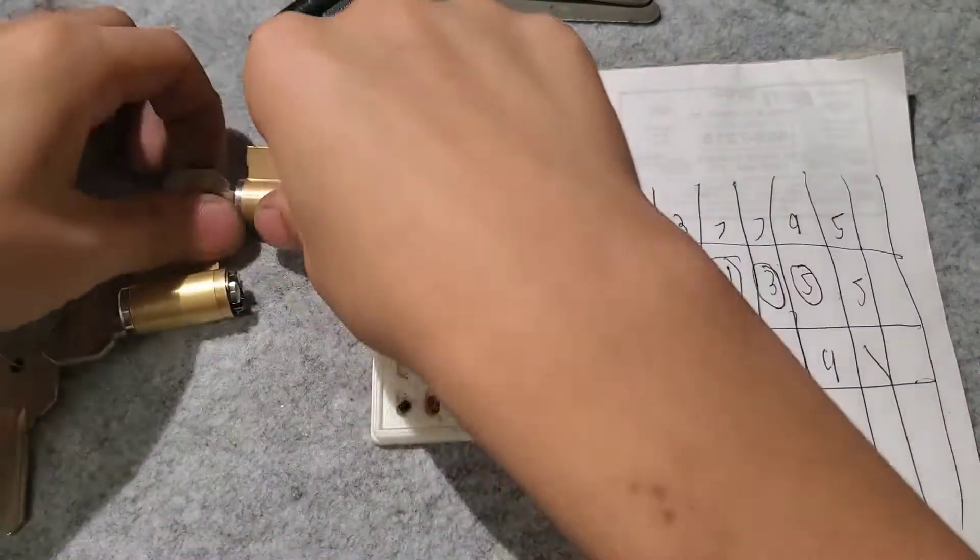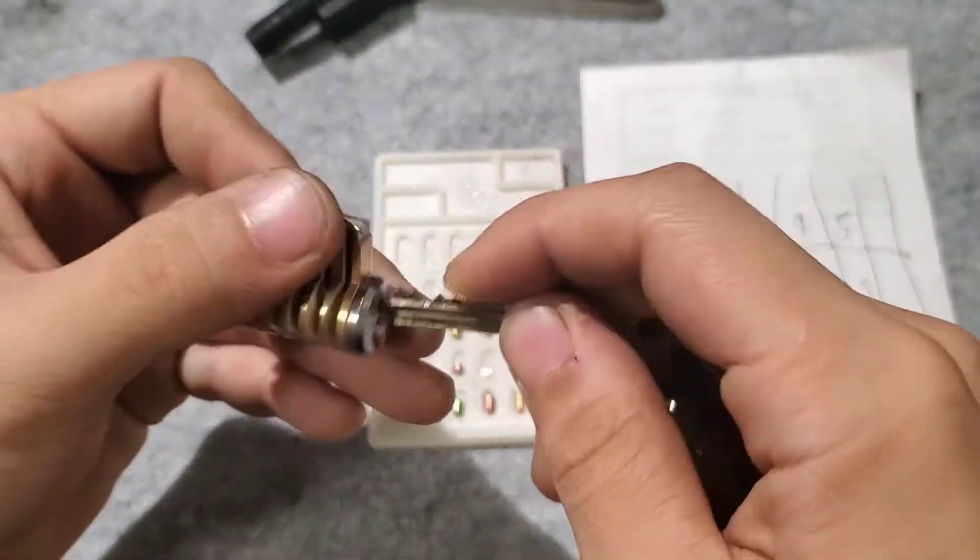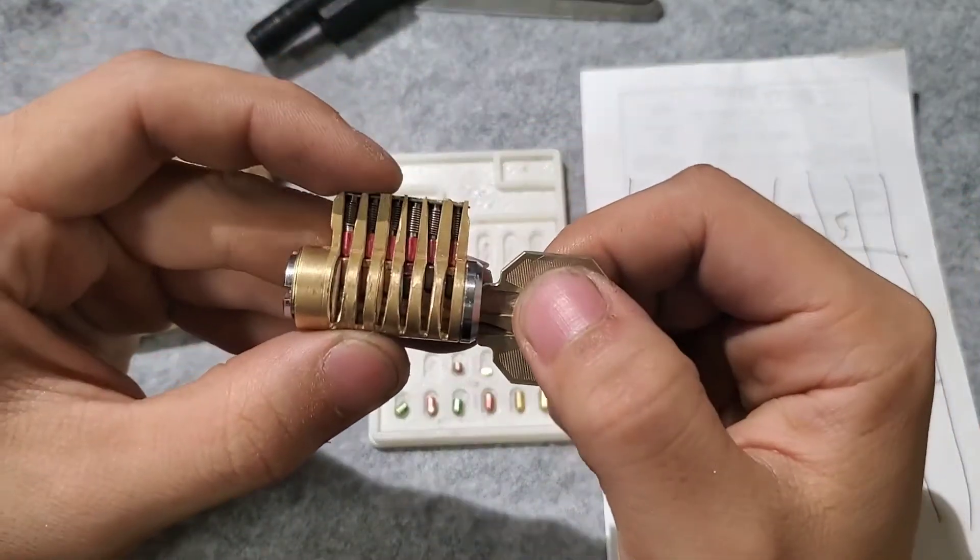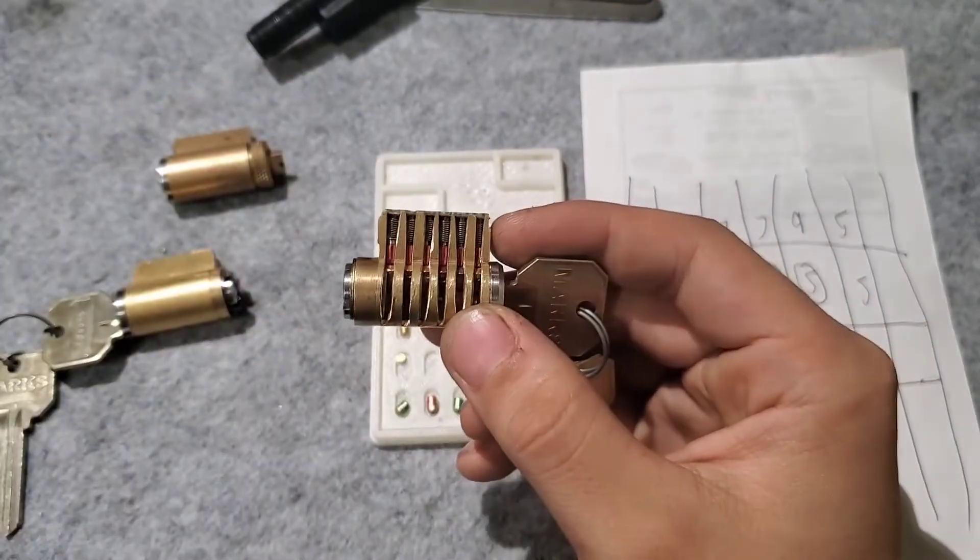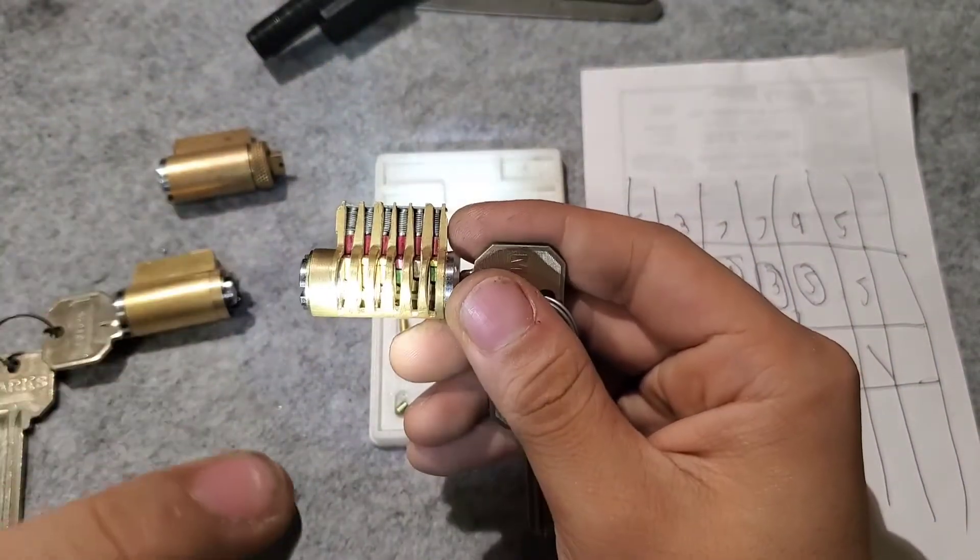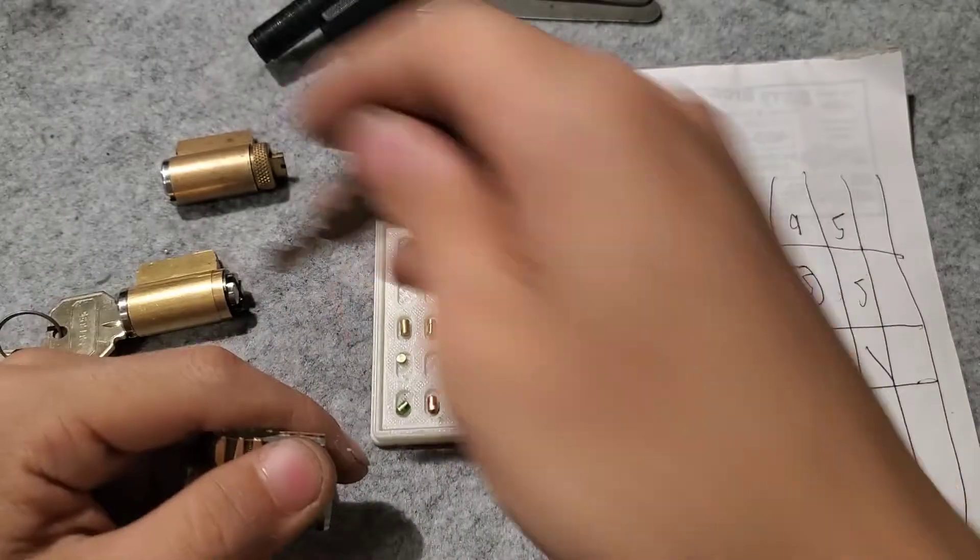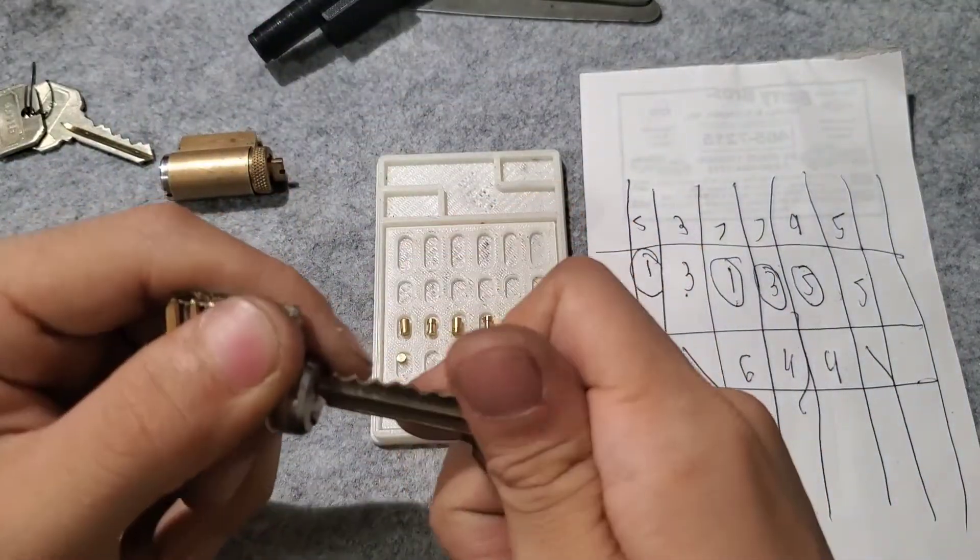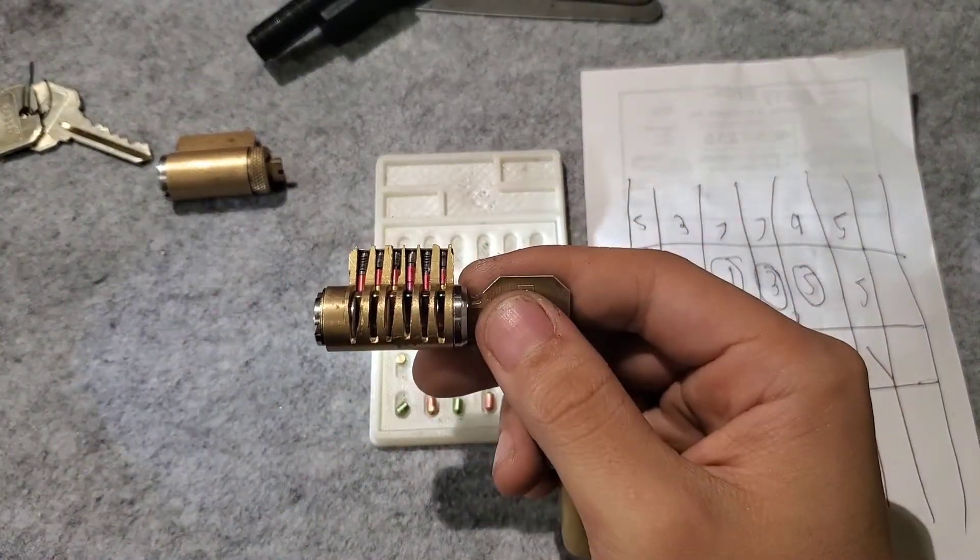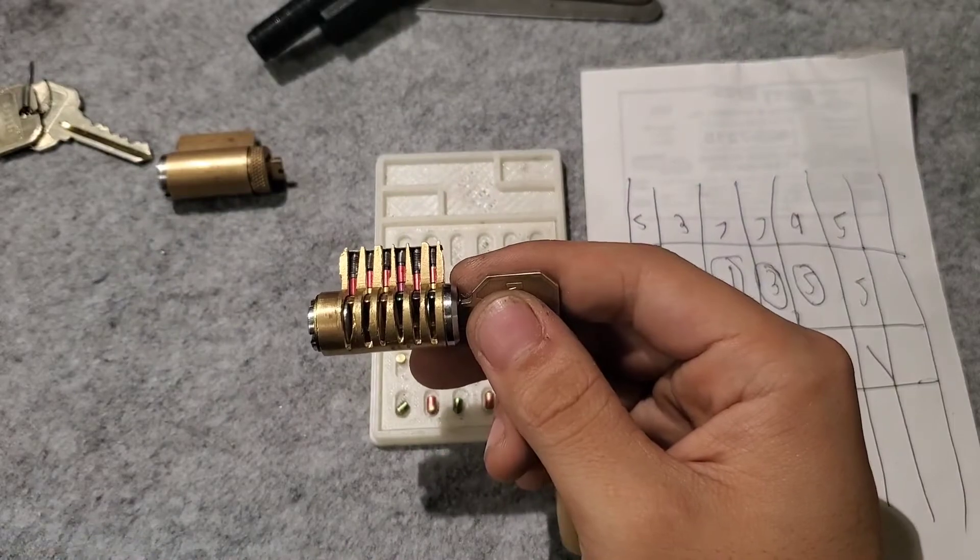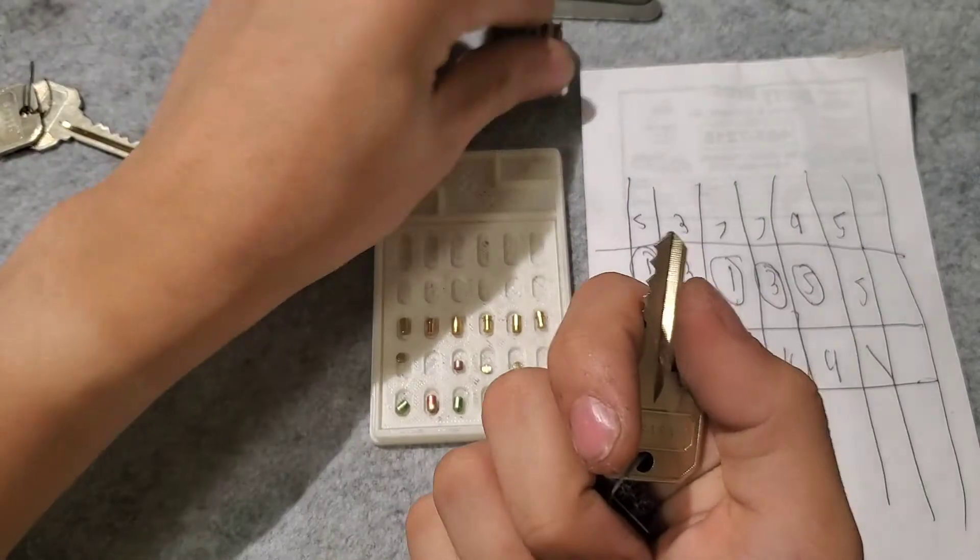And here is our master key. We'll see that when we put the master key in, all the driver pins are at shear and the master wafers are down in there. And when I pull this out and put our change key in, we're going to build this into this lock. I'm going to show you how to do that.